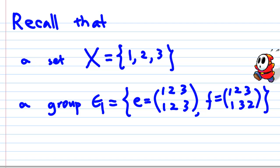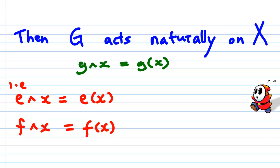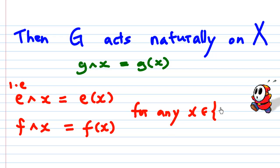And a map F, which is a transposition: 1 to 1, 2 goes to 3, and 3 goes to 2. Then we say that G acts on X, and G * x is just the image of x under the element of G. That is, E * x = E(x) and F * x = F(x) for any x belonging to the set {1, 2, 3}.